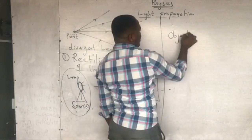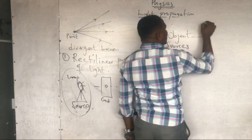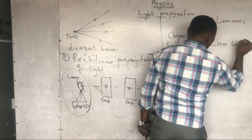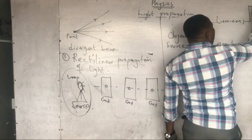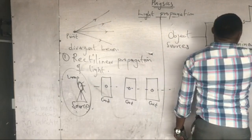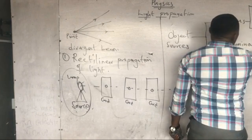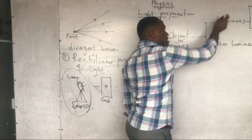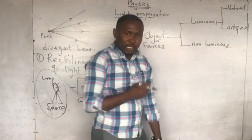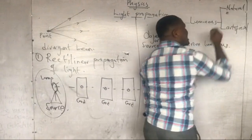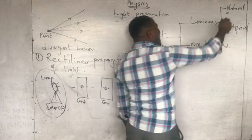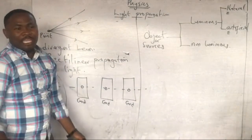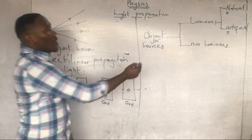Objects or sources could be luminous or non-luminous. Luminous means it has the ability to produce light, and non-luminous means it does not have the ability to produce light. Luminous sources can be natural or artificial.